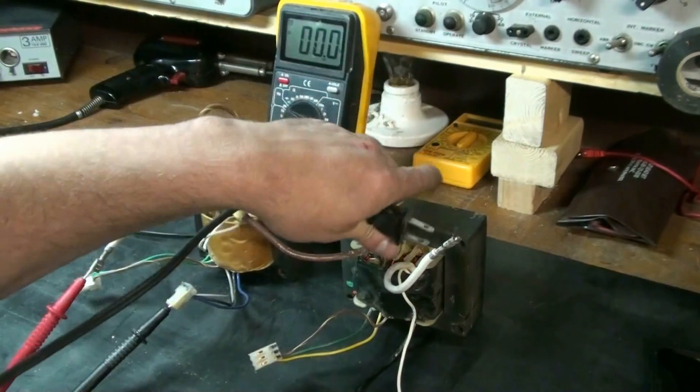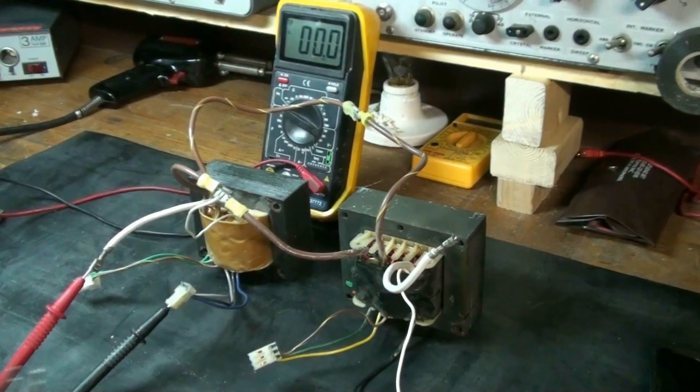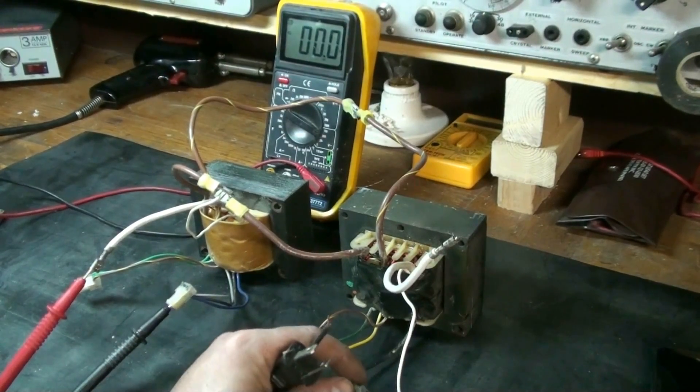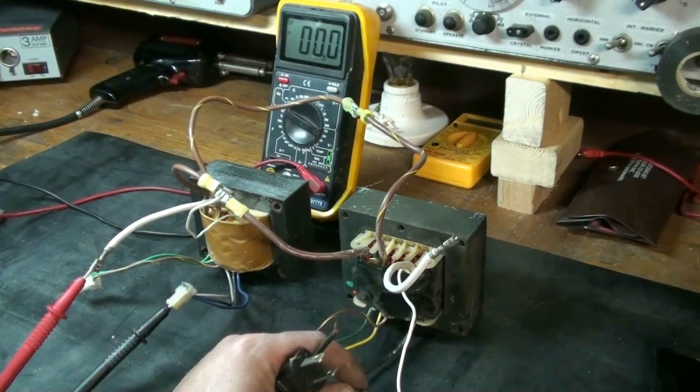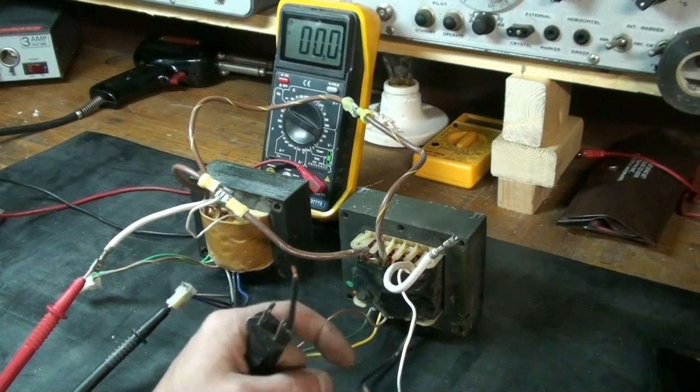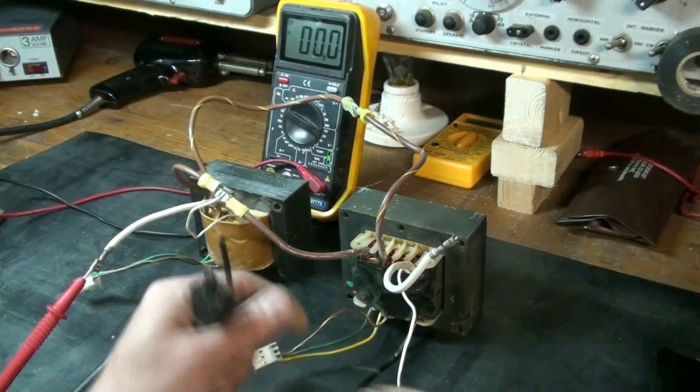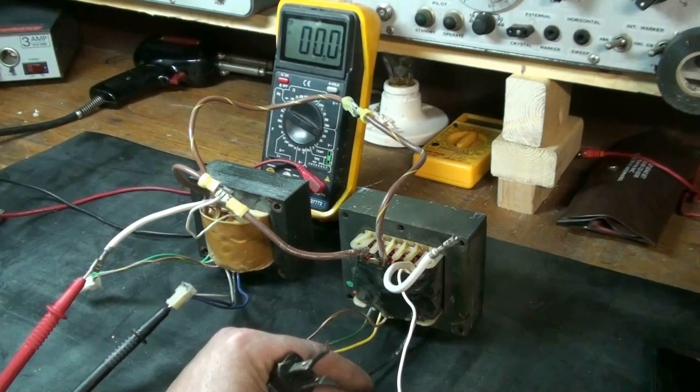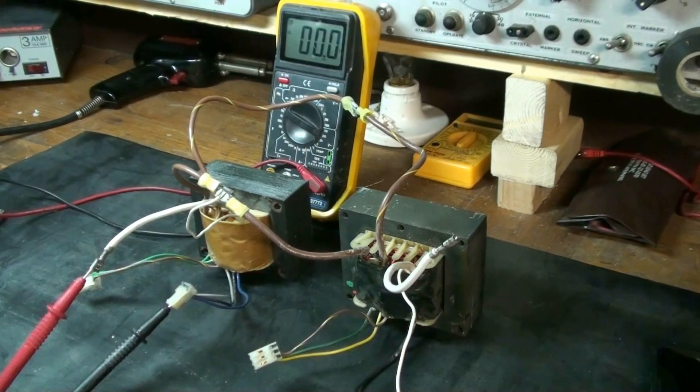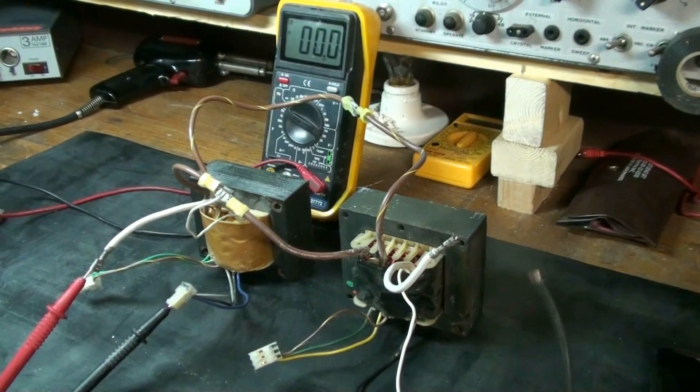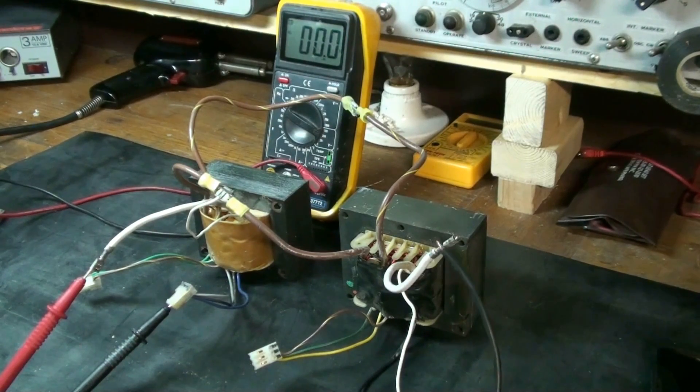The meter is set on 200 volts AC and we're going to be using the larger transformer as the primary transformer and the smaller transformer as the secondary transformer. We have our meter connected up to the smaller transformer and we'll connect power to the larger transformer.